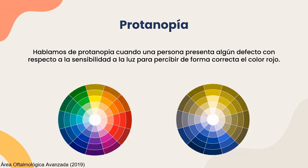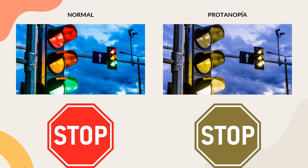Por lo general, vamos a hablar de protanopía cuando una persona presenta algún defecto con respecto a la sensibilidad a la luz para percibir de forma correcta el color rojo. También encontramos que no percibir correctamente el color rojo en el campo visual va a representar un gran problema para este tipo de personas, ya que normalmente el color rojo siempre ha sido atribuible a una señal de alerta o un alto, como podemos observarlo en los semáforos.